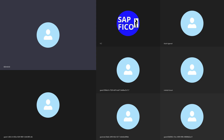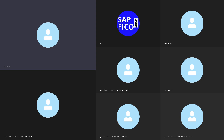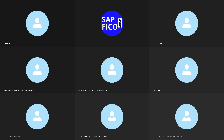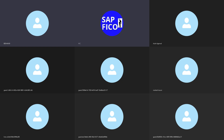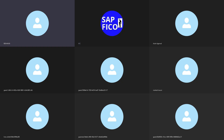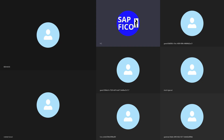Good morning, sir. Company code is an organizational unit and it is extremely important for deriving individual financial statements like profit and loss account and balance sheet. The transaction code to create the company code is OX02.